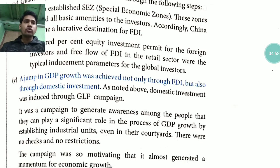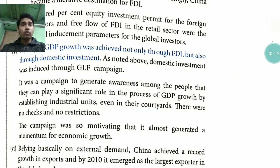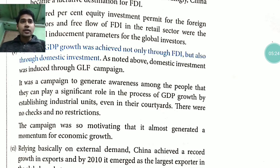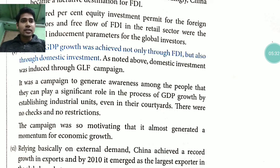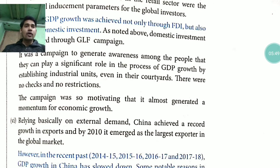A jump in GDP growth was achieved not only through FDI, but also through domestic investment — the country itself also invested. A campaign was launched to generate awareness among the people that they could play a significant role in the process of GDP growth by establishing industrial units, even in their own courtyards. There were no checks and no restrictions, so China became highly industrialized.